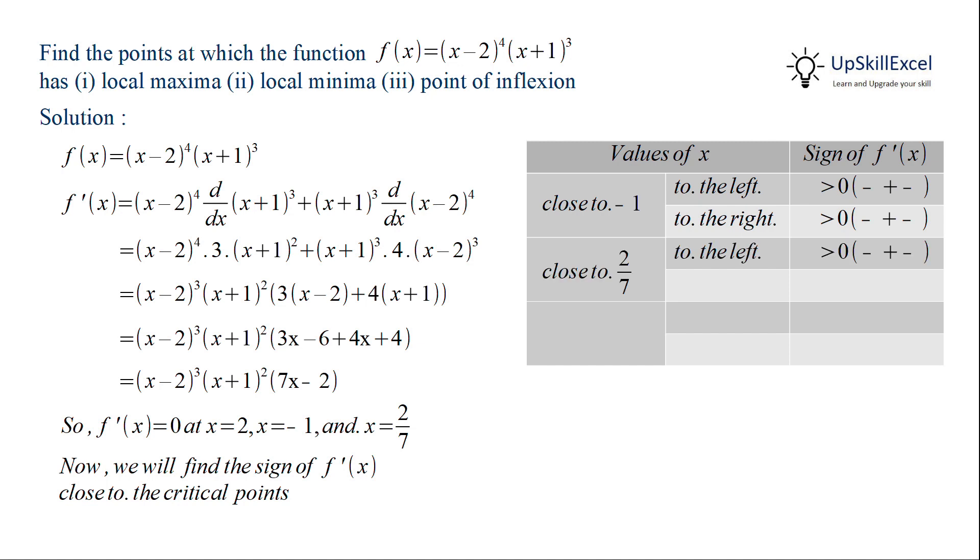Similarly when x is close to 2/7 from the left hand side, again first and third term are negative giving us a positive sign. But when we approach it from the right hand side, the sign of the third term changes to positive and hence f'(x) becomes negative.